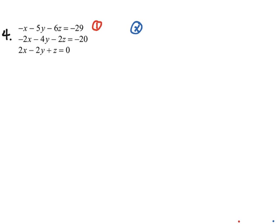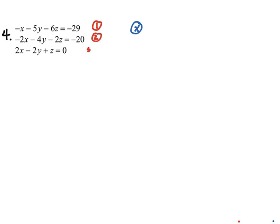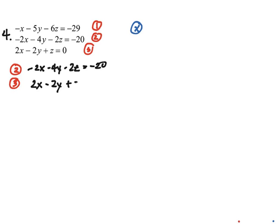So I'm going to number my equations: one, two, and three. First, let's go ahead and pair up equations two and three. I have negative two X minus four Y minus two Z equals negative 20, and then two X minus two Y plus Z equals zero. Let's go ahead and add them. So we have negative six Y minus Z equals negative 20. This is my fourth equation, and I have succeeded — I have eliminated X.